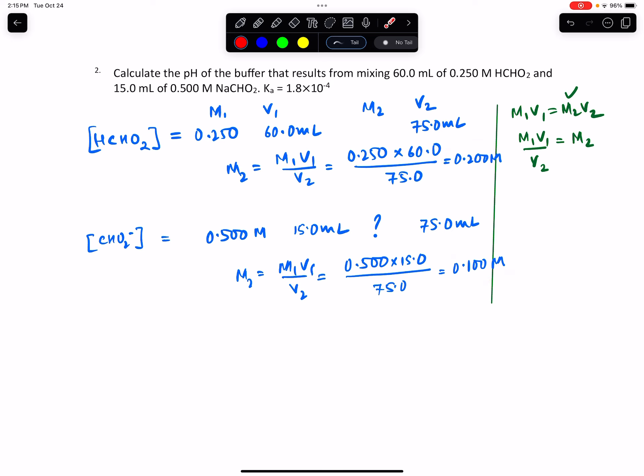At this point, we have enough information to plug into the Henderson-Hasselbalch equation: pH = pKa + log([base]/[acid]). Ka is 1.8 × 10^-4, so pKa = -log(1.8 × 10^-4), plus log(0.100/0.200).